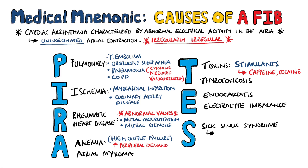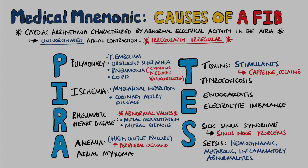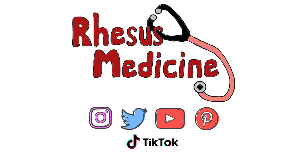S is for sick sinus syndrome, where there are problems with the sinus node. S is also for sepsis, which can cause AFib due to the hemodynamic, metabolic, and inflammatory abnormalities that are present in sepsis.